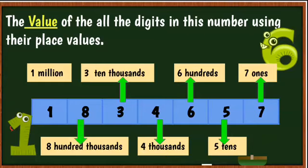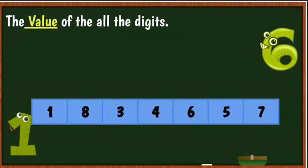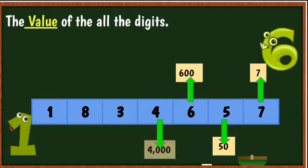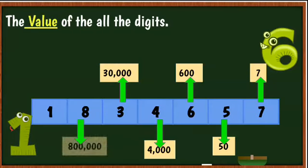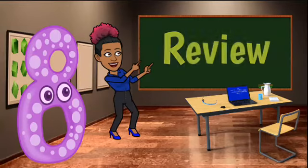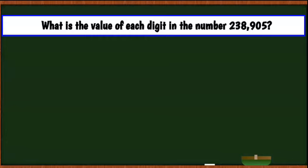Eight is eight hundred thousands, and one is one million. So the values are: seven is 7, five is 50, six is 600, four is 4,000, three is 30,000, eight is 800,000, and one is 1,000,000. That's the value of each digit in the number.